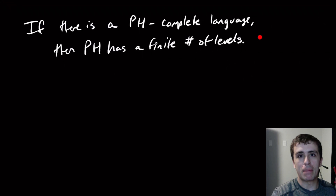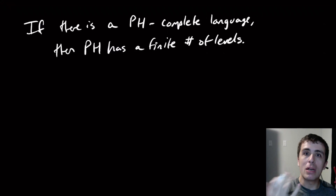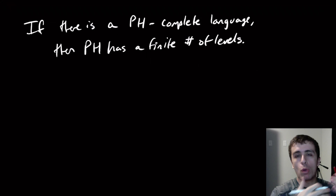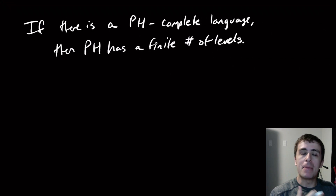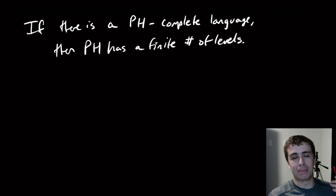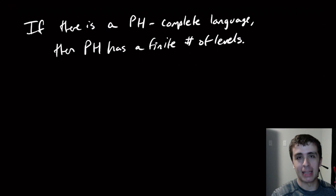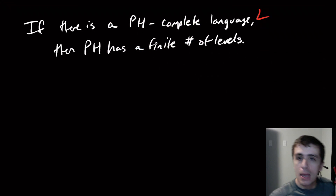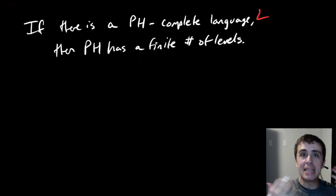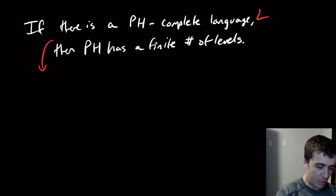What we can prove is that if there is a PH-complete language, then PH has a finite number of levels — which we believe is probably not true. So it's unlikely there's a PH-complete language. And if there isn't one, that will actually separate PH from PSPACE and from NP, since NP has a complete language and PSPACE has a complete language.